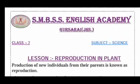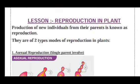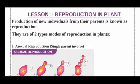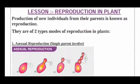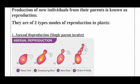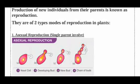There are two types of reproduction. Number one is asexual reproduction. In asexual reproduction, there is no sex organ involved, and only a single parent can reproduce through this mode.